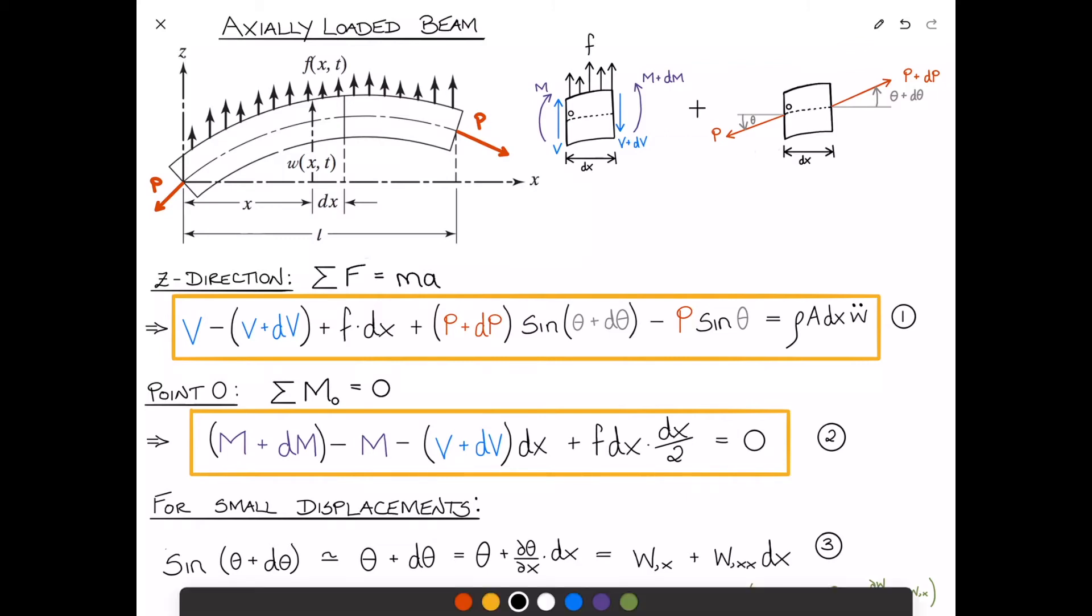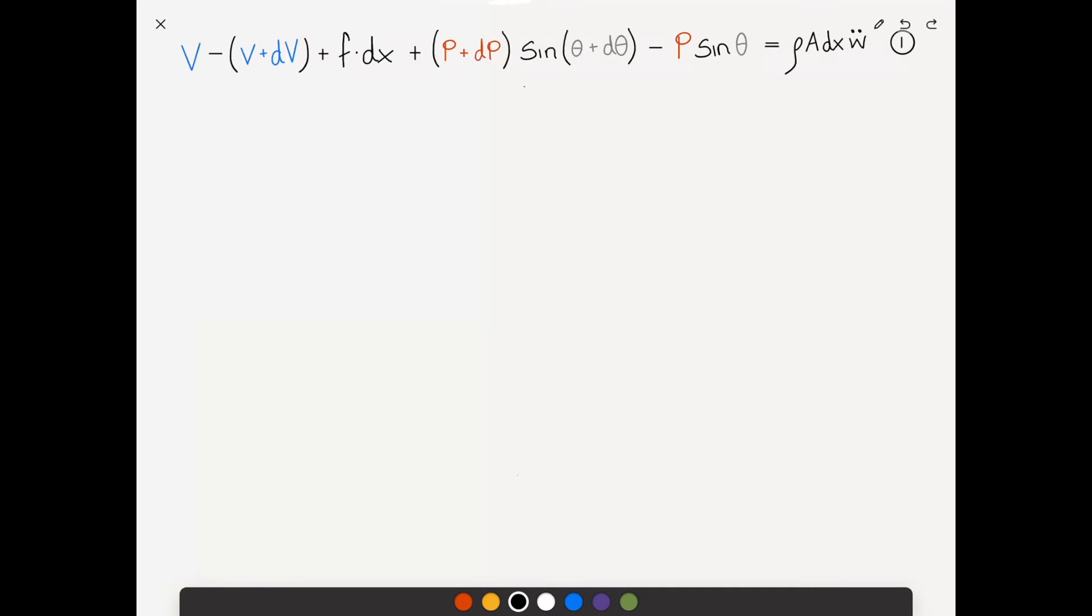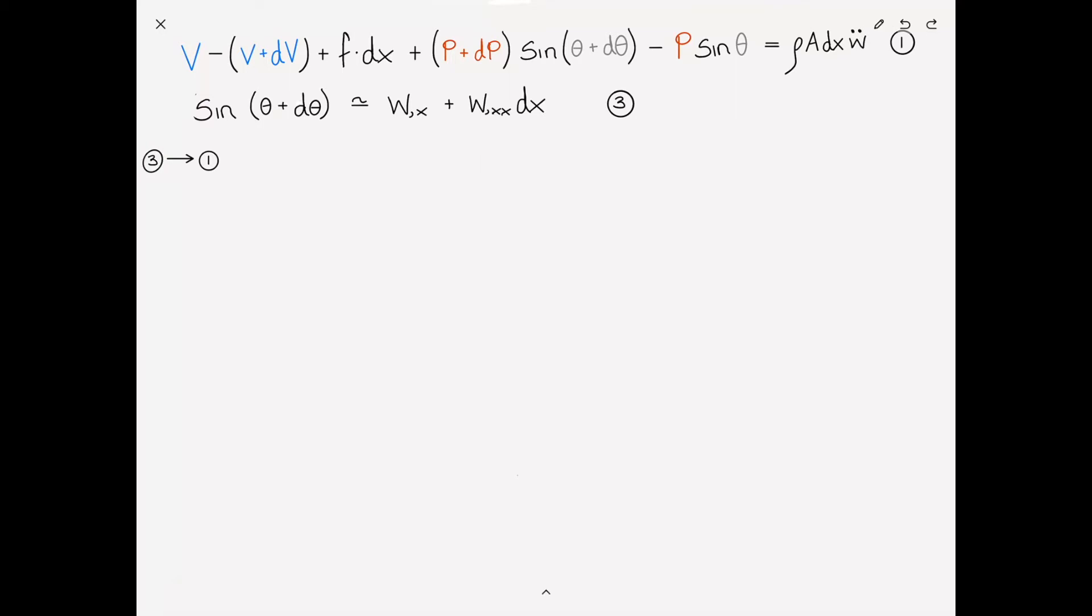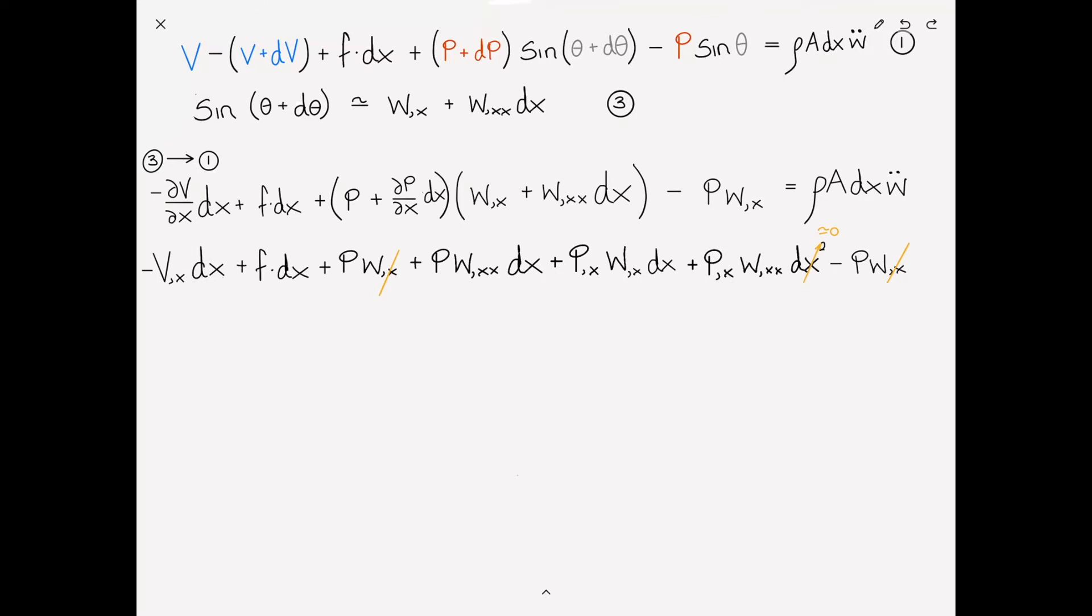Let's continue on the next page. I'm going to copy equations one and three over. The idea now is we want to substitute equation three into equation one, just straight substitution. Where I see sine of theta plus d-theta, I'm going to substitute expression three in there. V minus V cancel, dV I can rewrite as partial V partial X dx with a negative sign in front of it, plus F dx, plus P plus dP, which is partial P partial X times dx, times W comma X plus W comma XX dx, minus P times theta which is P W comma X, and that equals rho A dx W double dot. Then multiplying it all out and expanding it, you get a term with dx squared in it, which is a higher order term.